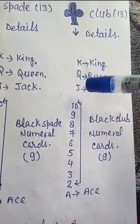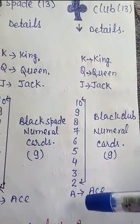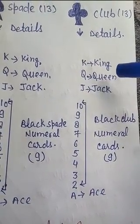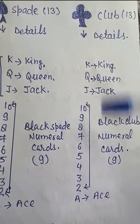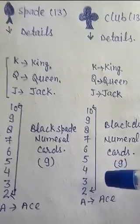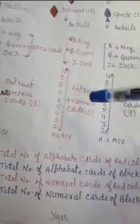In clubs, there are 3 face cards, alphabet cards including Ace, total number of 4 alphabet cards, and 9 numeral cards. So we can learn these basic points easily about the playing card structure.